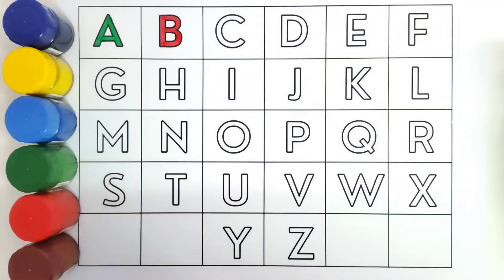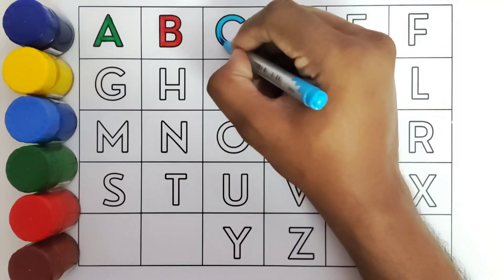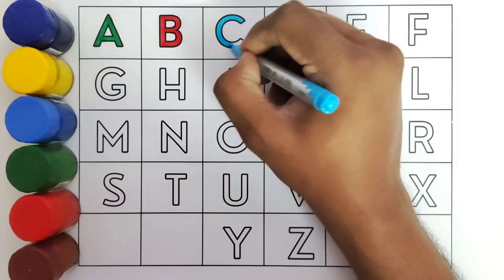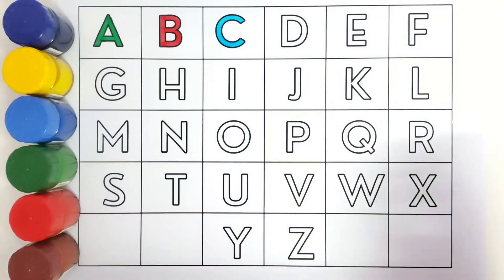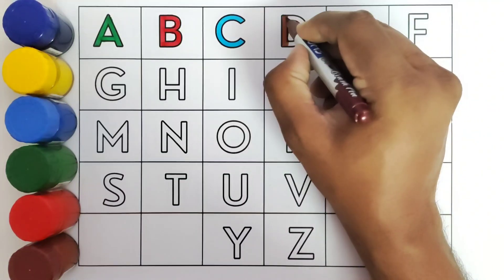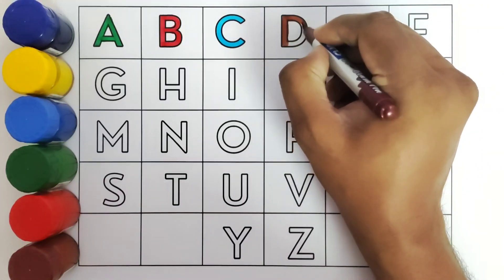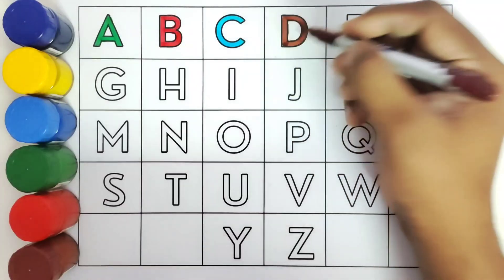This is C. C for cat, C for cat. This is D. D for dog, D for dog.